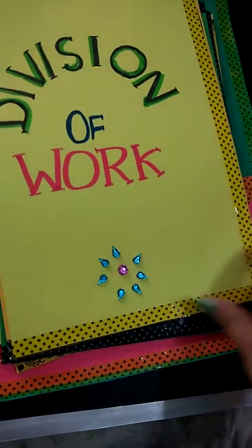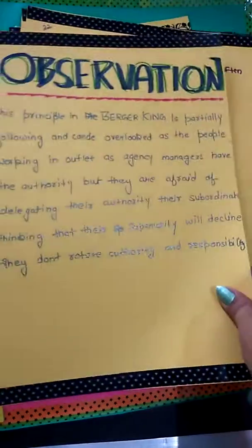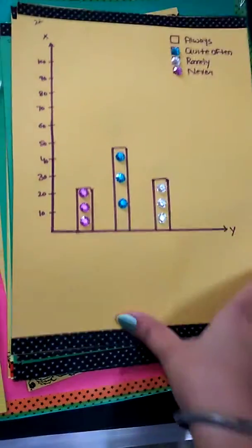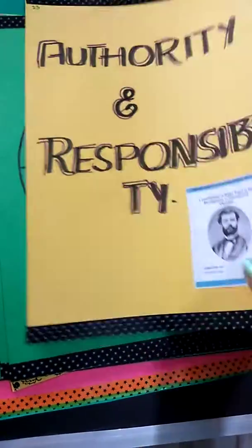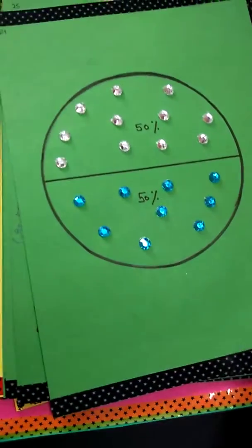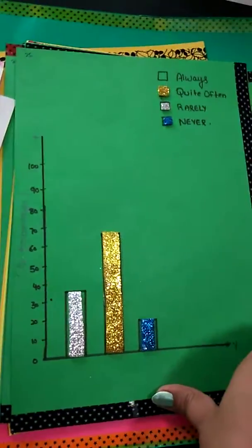Next is initiative, followed by the principles followed by Burger King, the region of observation, and the charts. This file is full of diagrams, charts, and analysis.